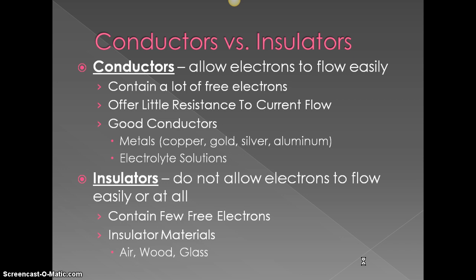Insulators do not allow electrons to flow easily or at all, so there's very few free electrons. Some insulator examples would be air, wood, and glass.